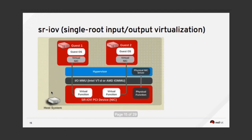SR-IOV gives us multiple physical interfaces — it looks like each instance has its own dedicated interface. Inside the instance you're going to see a dedicated interface. You take all the overhead from the hypervisor because it passes the virtual function directly attached to the instance. That is the idea of Single Root I/O Virtualization. This requires a chip that comes with this flag — not all network devices have this functionality, so you must check if your network device supports it.